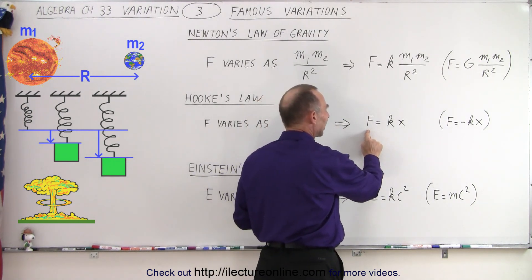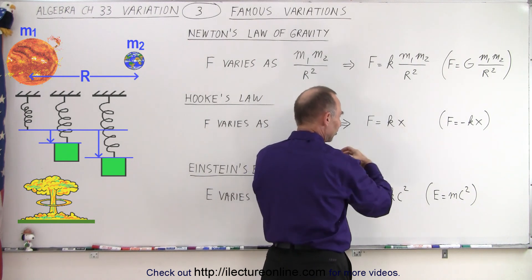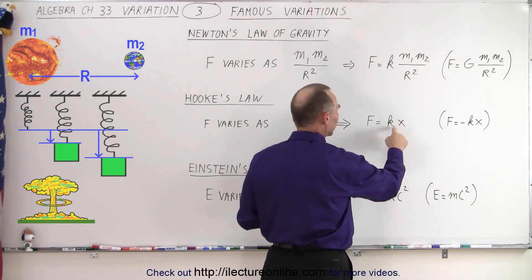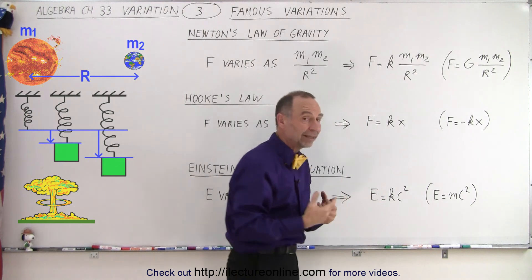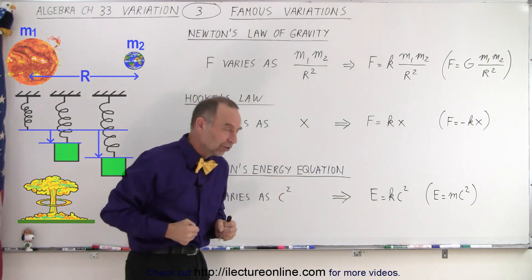the relationship is that F varies directly as X, as how much you elongate the spring, and then K would be the constant that's proportional to the strength of the spring.